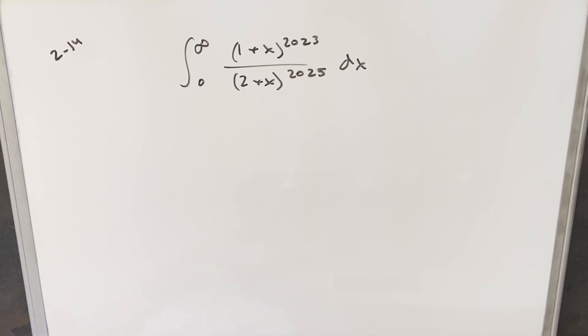Okay, I want to do actually a quick follow-up on a problem from the UNSW integration B2023, round two, problem 14. We have the integral from zero to infinity, one plus x to the 2023 over two plus x to the 2025 dx.